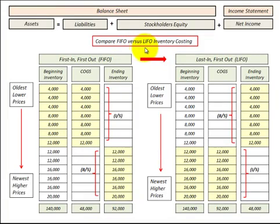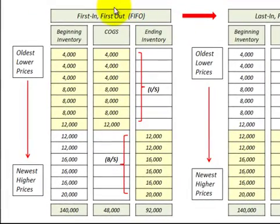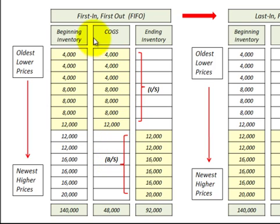Here we are going to compare FIFO versus LIFO inventory costing and how each of these methods affect our balance sheet and our income statement. First I'll go through examples for each of the methods to show what inventory costs are included in our cost of goods sold on our income statement and our ending inventory on our balance sheet. We're going to go through these examples using tables.